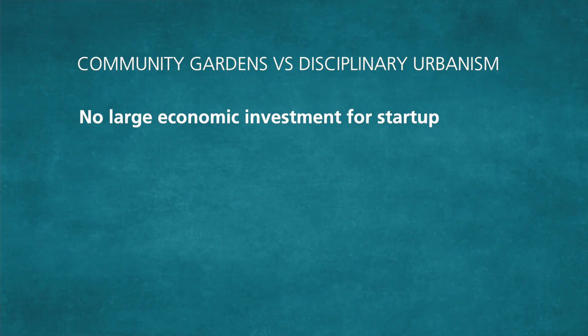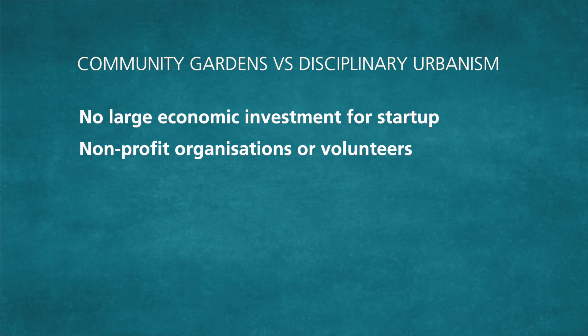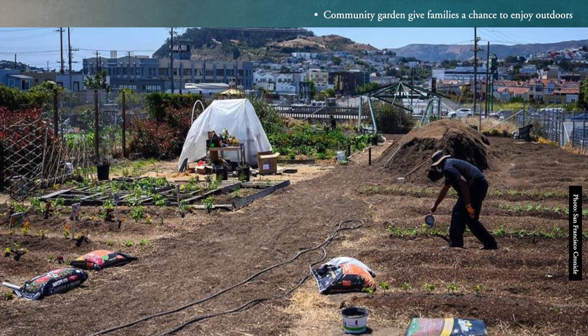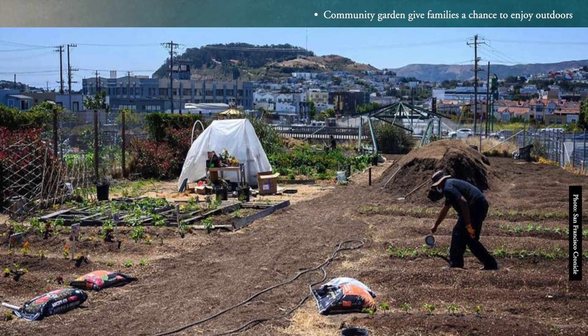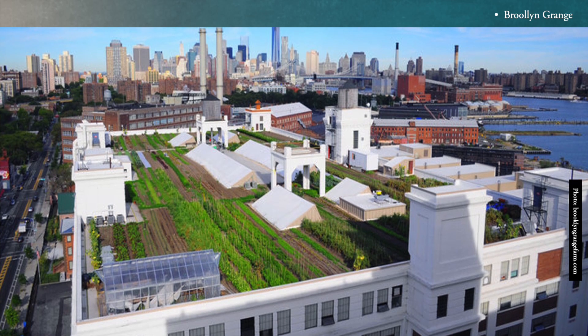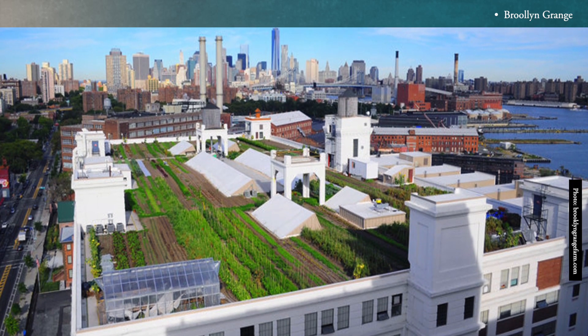Community gardens question the value that teams inherit from disciplinary urbanism. They do not need a large economic investment for startups. Non-profit organizations or other volunteers are usually responsible for leadership and for proposing strategies. They are usually temporary — the land-use permission predominates over the ownership of the site. They can be open to the public or restricted to private users, as planned or spontaneous projects. They can flexibly fit into small pockets offered by the city, such as areas surrounding infrastructures or rooftops, as here in the Brooklyn Navy Yard Farm, where 1.5 acres is used for gardening and beekeeping.